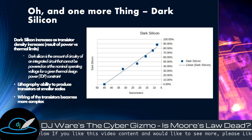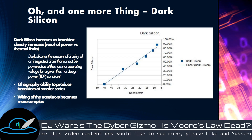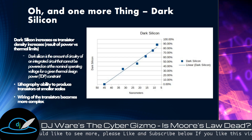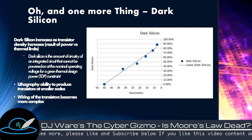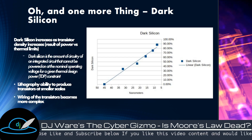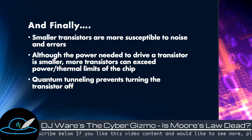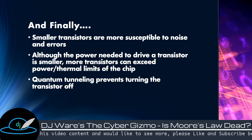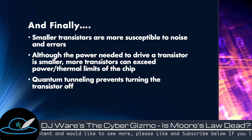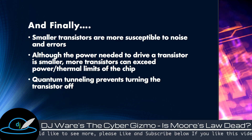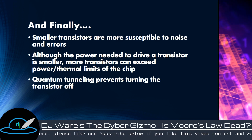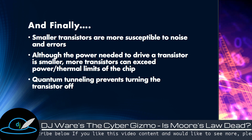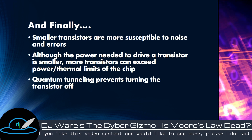There are two more problems. Lithography is going to be a challenge — continuing to use lithography to create transistors on silicon wafers. The wiring of those transistors also becomes more complex: the wires get thinner and smaller, building up resistance and generating more heat. Smaller transistors are also more susceptible to noise and error. And quantum tunneling occurs — electrons show up on the transistor out of nowhere, preventing us from turning the transistor off. Turning it on is fine, but we also need to turn it off, and quantum tunneling can prevent that.